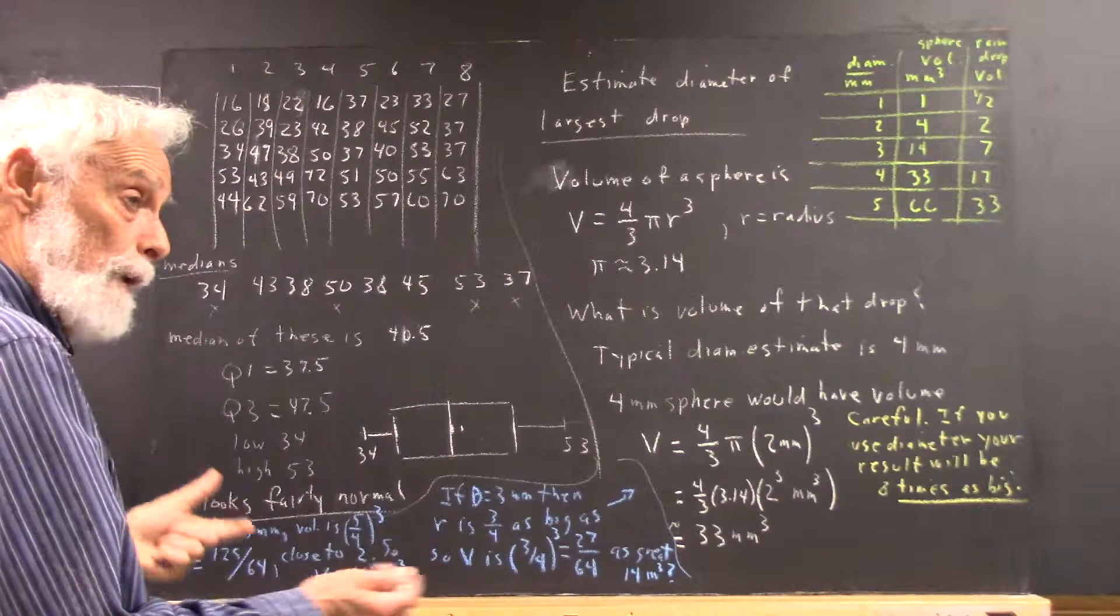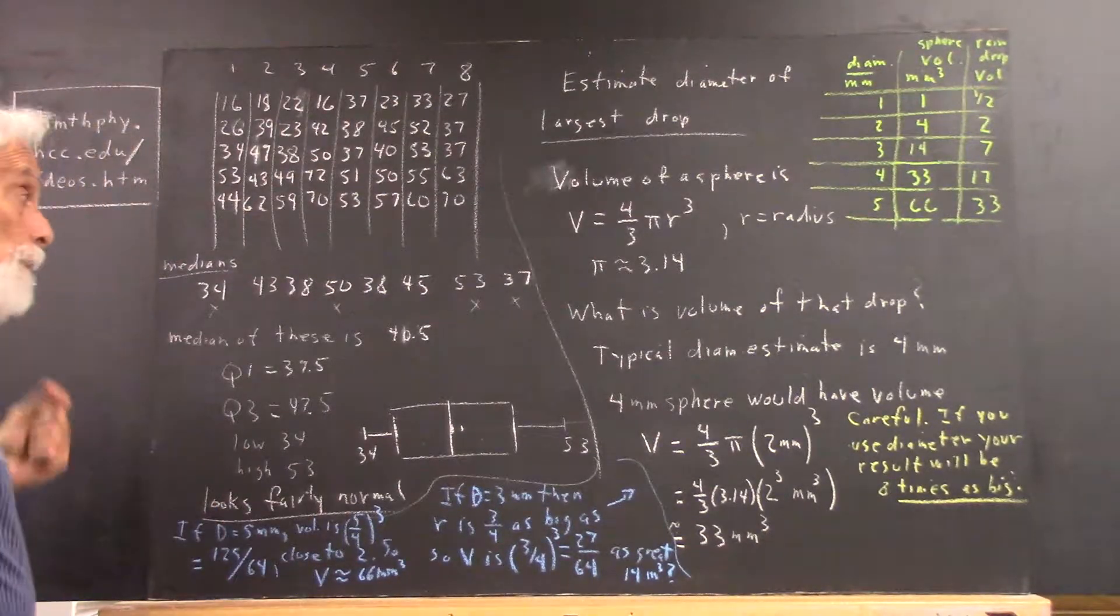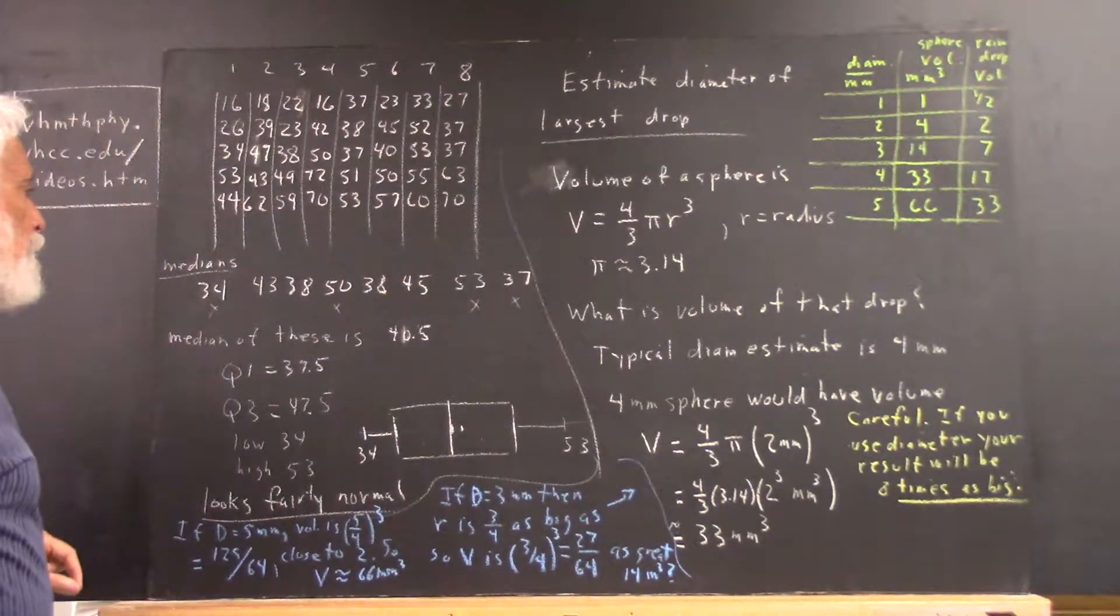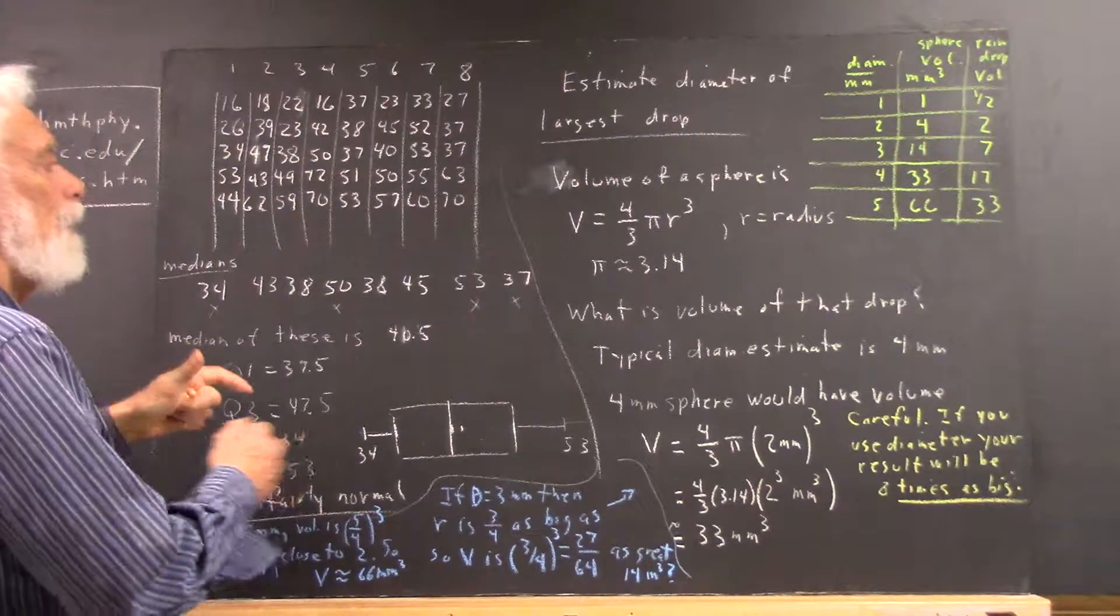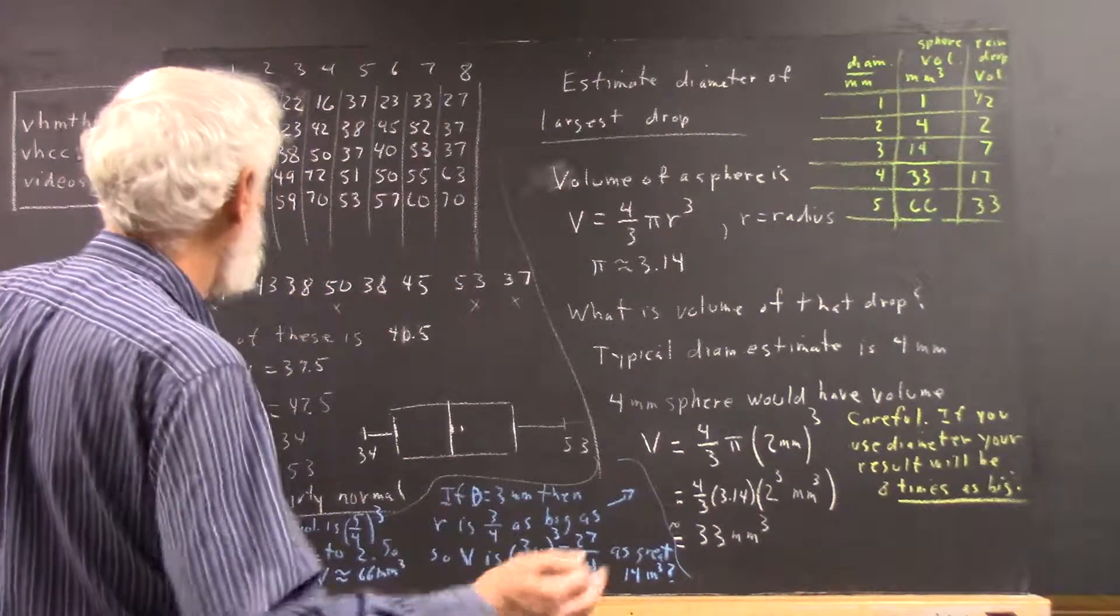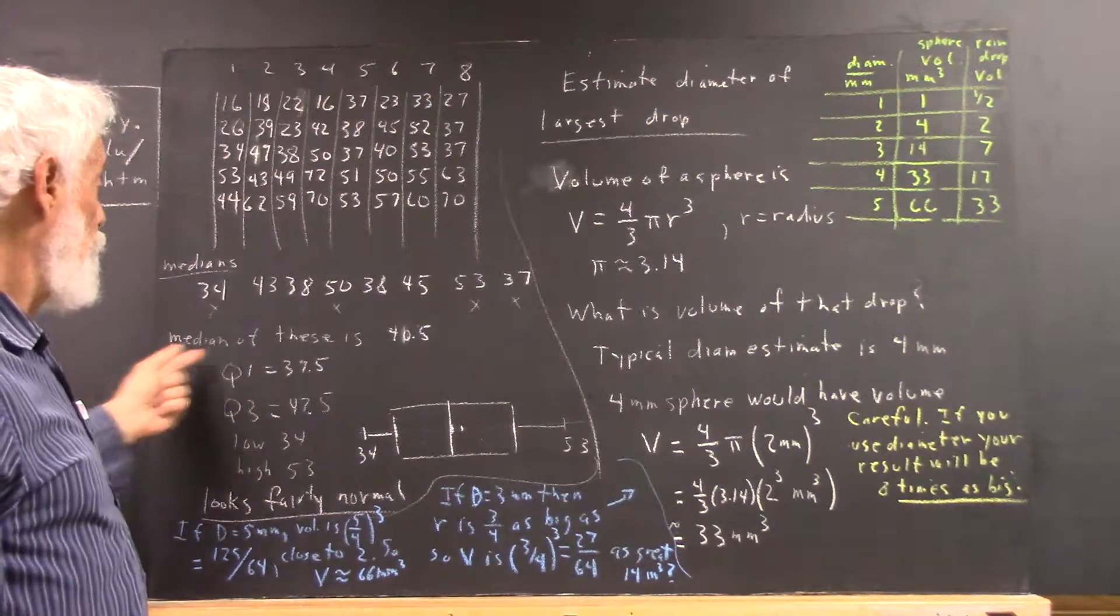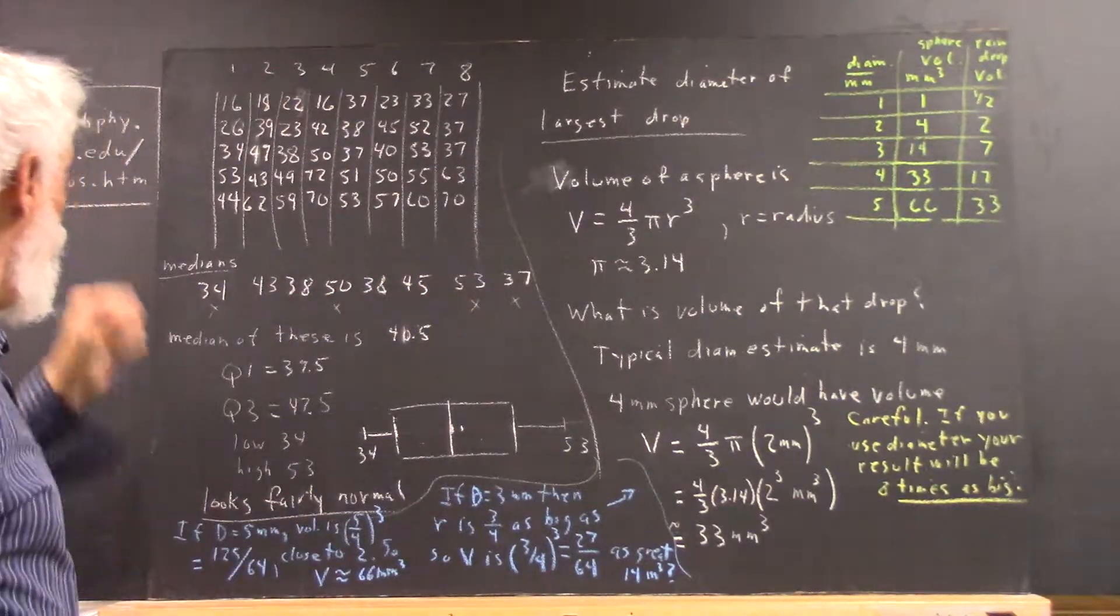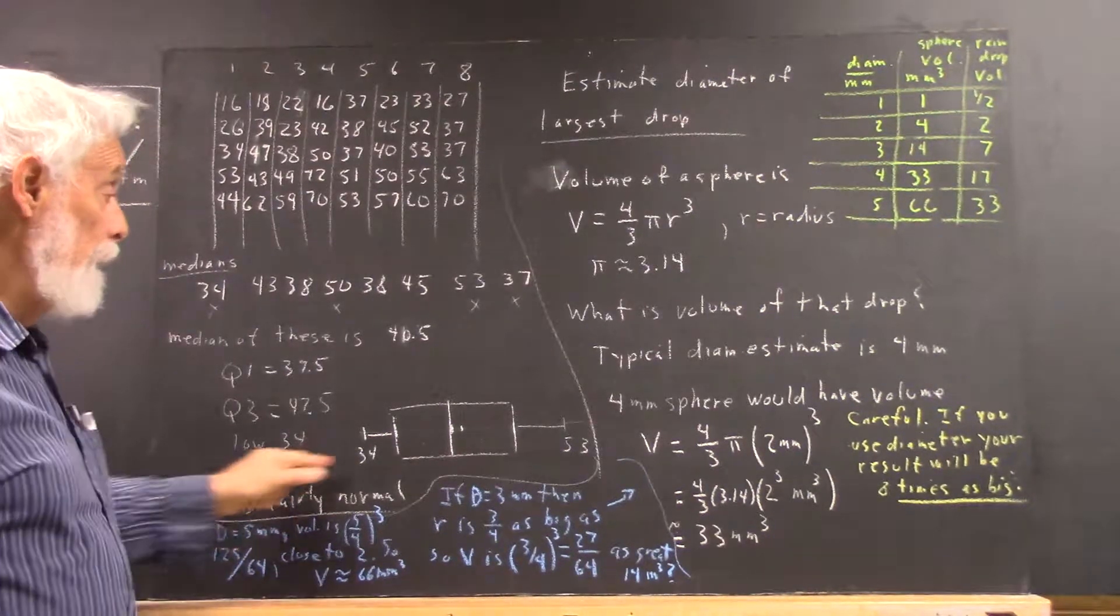Now, if the number of raindrops falling on a square centimeter or a two centimeter square is normal, if the distribution is normal, then the box plot ought to be reasonably consistent with normal. Now, you can't make firm conclusions based on a sample of just eight two centimeters square, so we're just getting an overall indication. But I took the median of these medians. I got 40.5. And I got the first and third quartile, listed the low and the high, and I got a box plot.